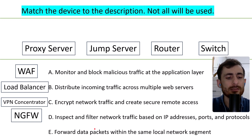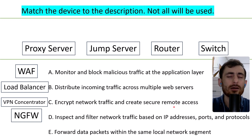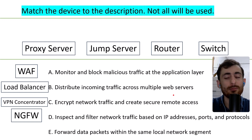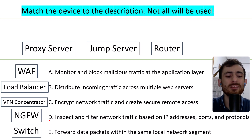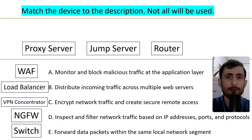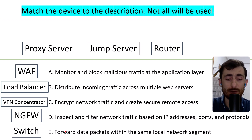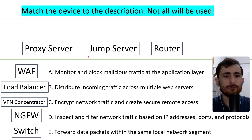Option E: forward data packets within the same local network segment. You might think router, but no — that's the switch. Write down in the comments what the difference is between a switch and a router. If you haven't studied that yet, you should — it's one of the key components.